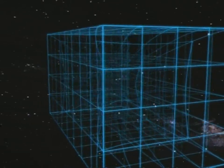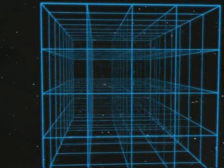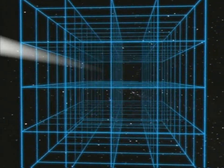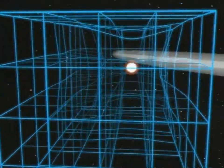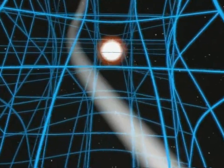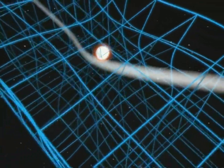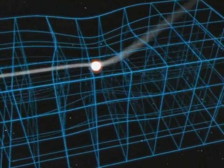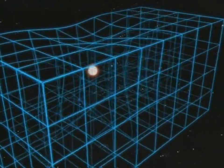Without matter to curve space, light rays would travel in a straight line. When space is warped, light traveling through it would follow a curve. This causes space itself to act like a gravitational lens.